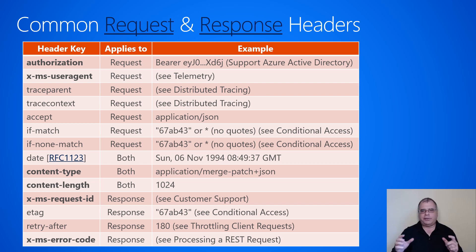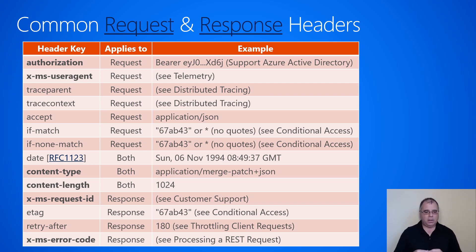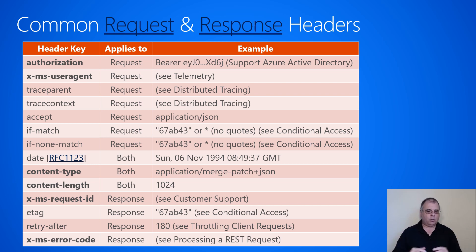All header values are sent as strings, so you need a clear contract for what the format of that value is going to be. For example, the date header must follow RFC 1123 format — something like Sunday, 6 November 1994, at 08:49:37 GMT. It's critical that this is a contract between the client and the service, because the client has to send the date in this format so the service can parse it, and the service sends a date back that the client must also be able to parse. Many of these headers are defined by the HTTP specification.